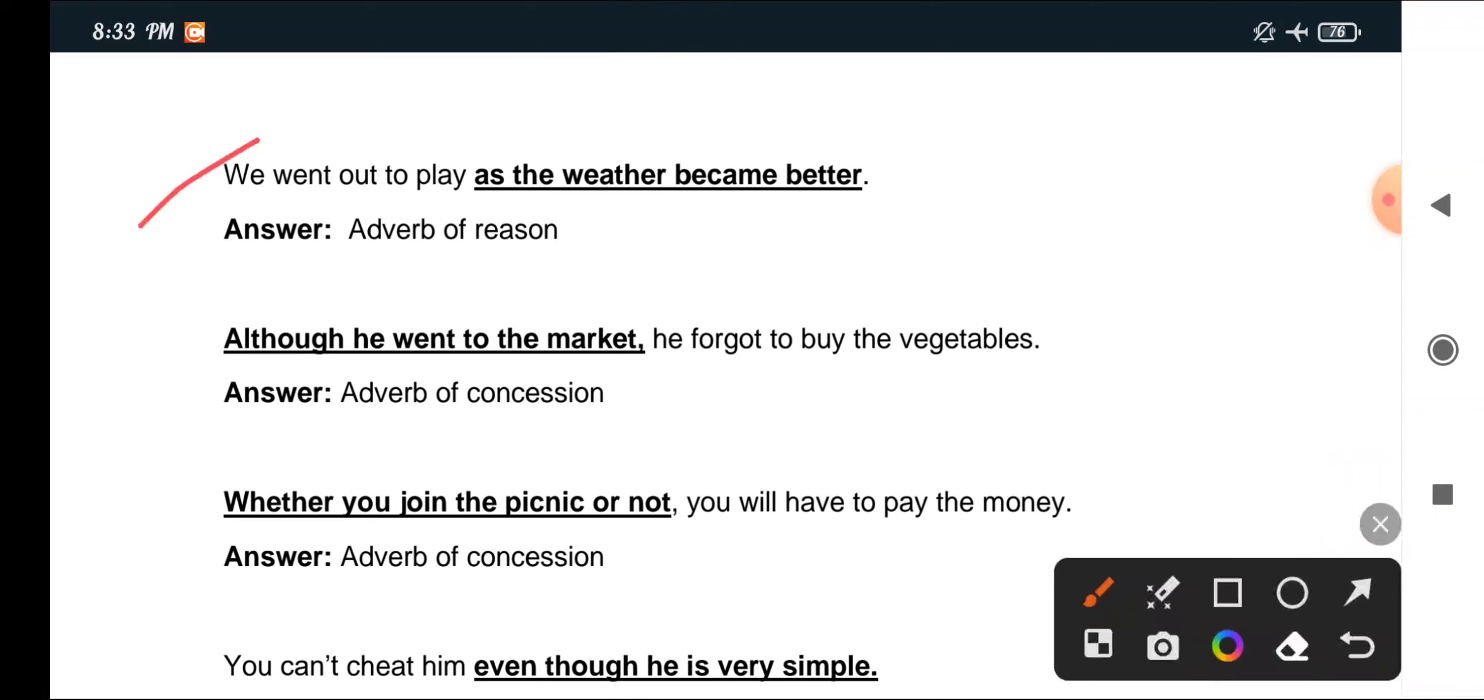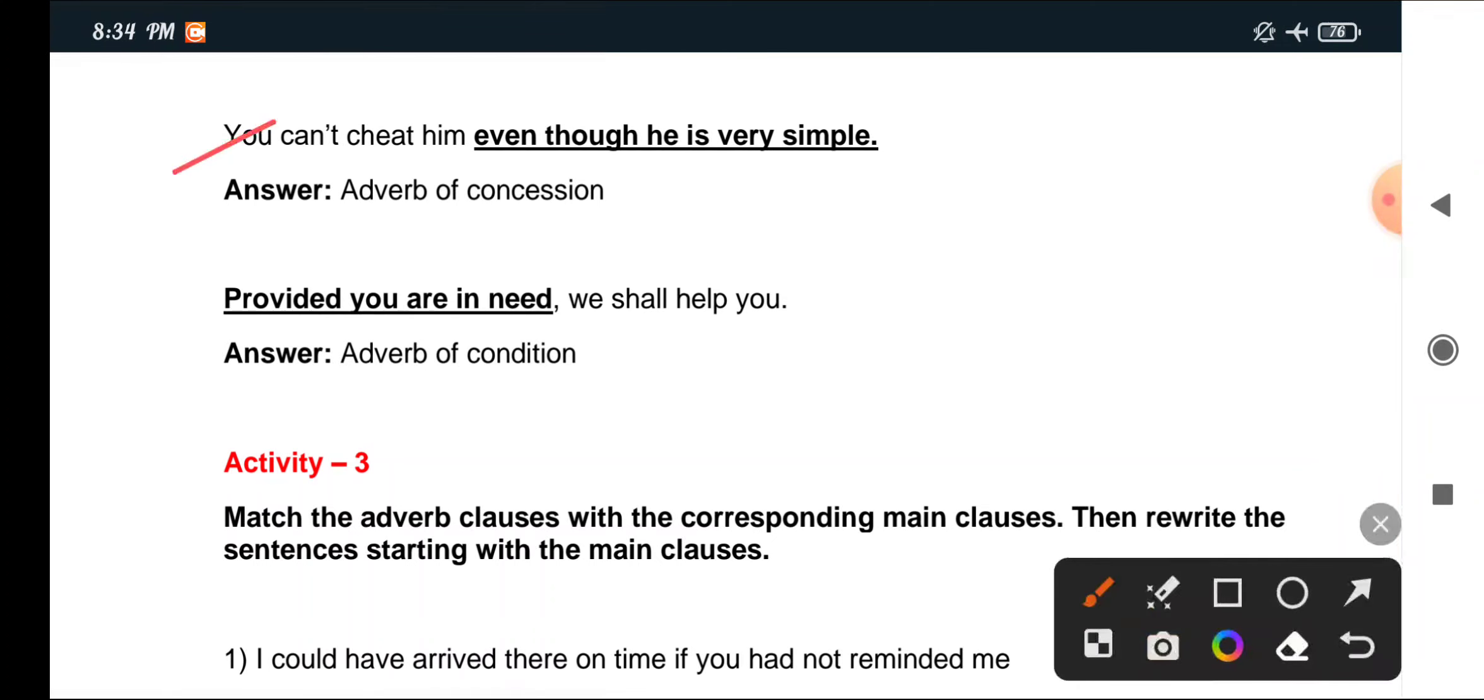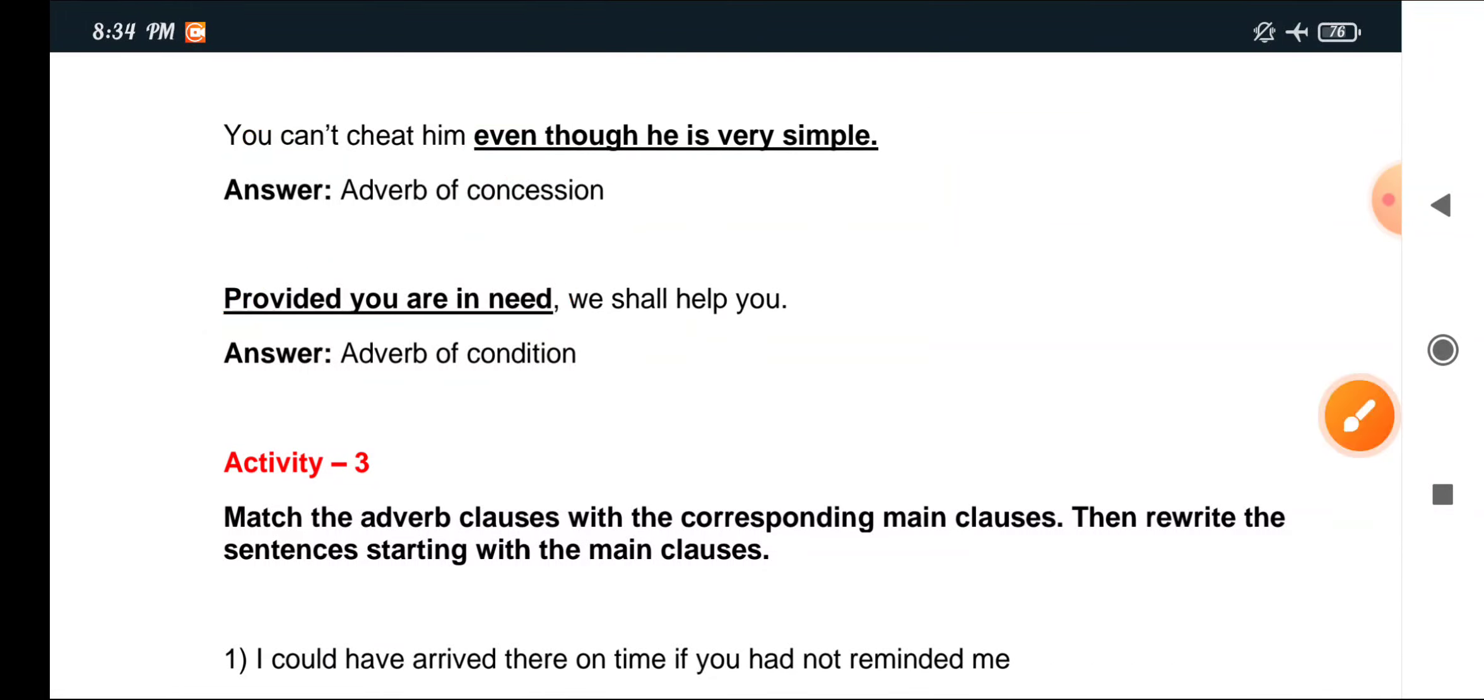We went out to play as the weather became better - adverb of reason. Although he went to the market, he forgot to buy the vegetables - adverb of concession. Whether you join the picnic or not, you will have to pay the money - adverb of concession. You can't cheat him even though he is very simple - adverb of concession. Provided you are in need, we shall help you - adverb of condition.